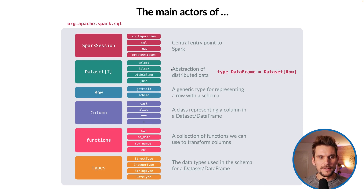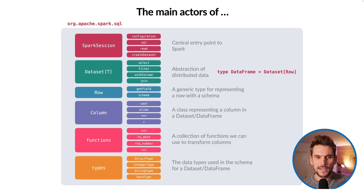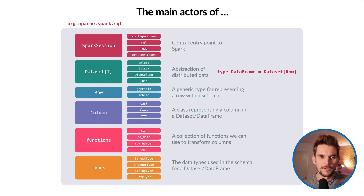In Python we only work with a DataFrame, which is basically a Dataset of type Row. The Row type is a generic type for representing a row in a DataFrame — you can think of one row in a table being modeled as this Row type. The Row has a schema and we can use accessors to get values from it. For example, if you had a row consisting of two columns, id and value, you could call row.get("id") to retrieve the value for that column.